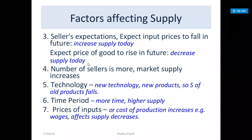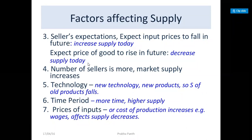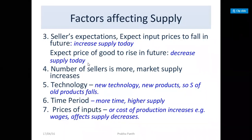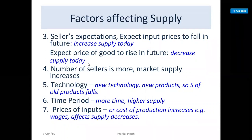Time period also matters — more time means higher supply. If a dealer gives more time to the producer, he will supply more goods. If the time period is very short, he can't produce more. Prices of inputs also vary supply: if cost of production increases, we expect selling price to increase too, but if selling price does not increase, the supplier will reduce supply. For example, wages affect supply.